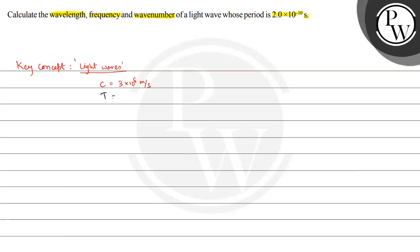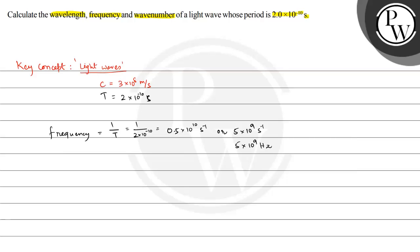Here we have time period given: T is equal to 2 multiplied by 10 raised to the power minus 10 seconds. Now, frequency as we know is 1 by time period, that is 1 by 2 multiplied by 10 raised to the power minus 10. This is 0.5 multiplied by 10 raised to the power 10 second inverse, or 5 into 10 to the power 9 Hertz. So mu is equal to 5 into 10 to the power 9 Hertz. This is our frequency.